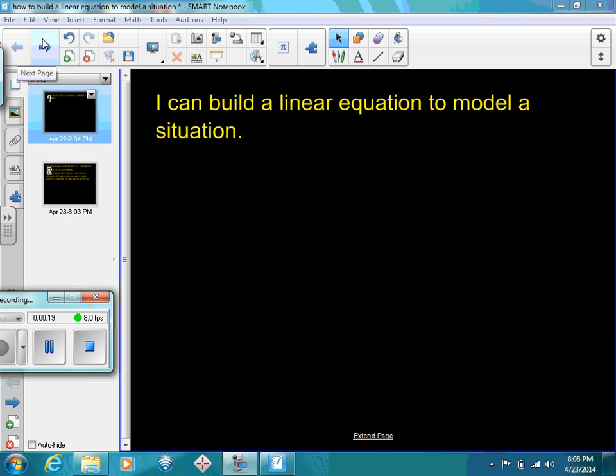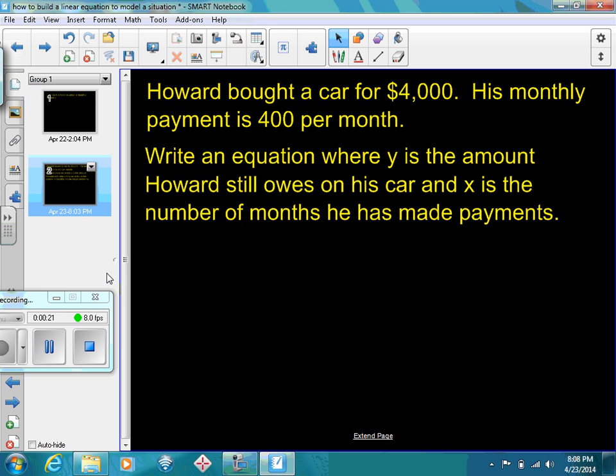Let's look at a really simple situation where the problem is almost begging you to follow it. Howard bought a car for $4,000. His monthly payment is $400 per month. Write an equation where y is the amount Howard still owes on his car and x is going to be the number of months he has made payments.